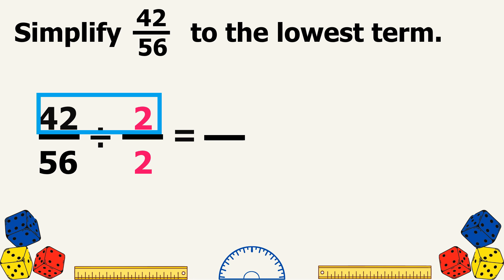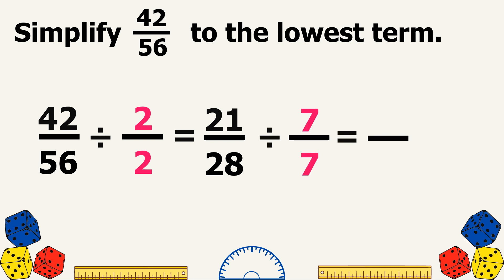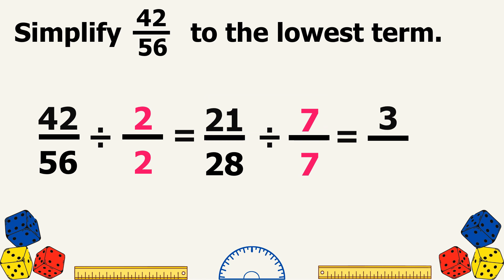42 divided by 2 equals 21. 56 divided by 2 equals 28. Now, 21 and 28 can still be divided by a common factor, which is 7. So let's continue dividing: 21 divided by 7 equals 3, and 28 divided by 7 equals 4.